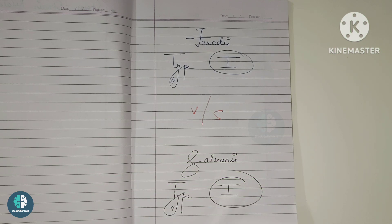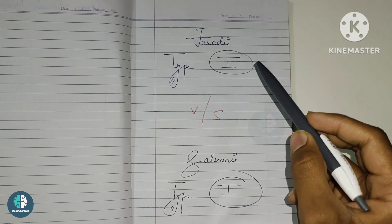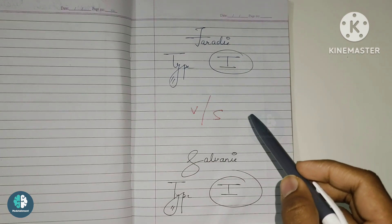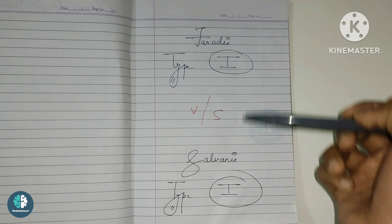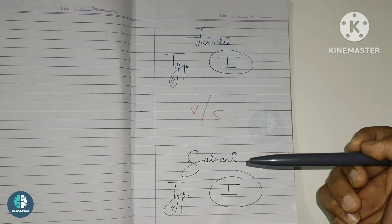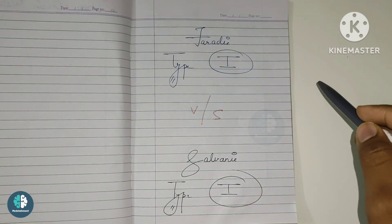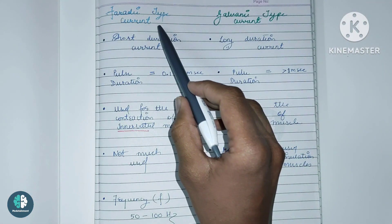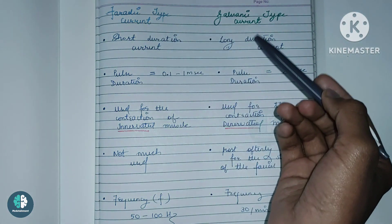So, without wasting any further time, let's get started. Today we are going to talk about a very important topic — the difference between the faradic type current and the galvanic type current. In the last video, we saw the difference between the original faradic and the faradic type current. But today, we are going to compare the faradic type and the galvanic type current and see the difference between the two.